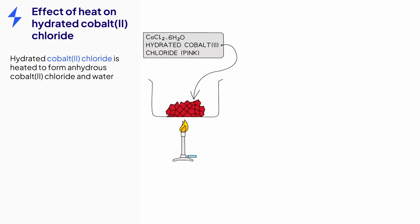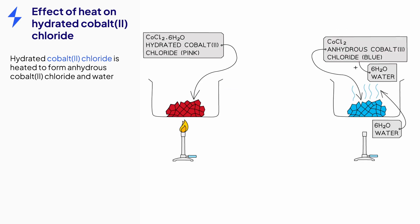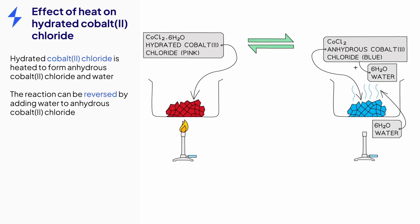Cobalt(II) chloride is another hydrated salt that can be heated to produce anhydrous cobalt(II) chloride and water. Hydrated cobalt(II) chloride is a pink solid, whereas anhydrous cobalt(II) chloride is blue, so a distinctive color change is observed during this reaction. When water is added to blue anhydrous cobalt(II) chloride, the reverse reaction occurs and hydrated cobalt(II) chloride is formed, which is pink.